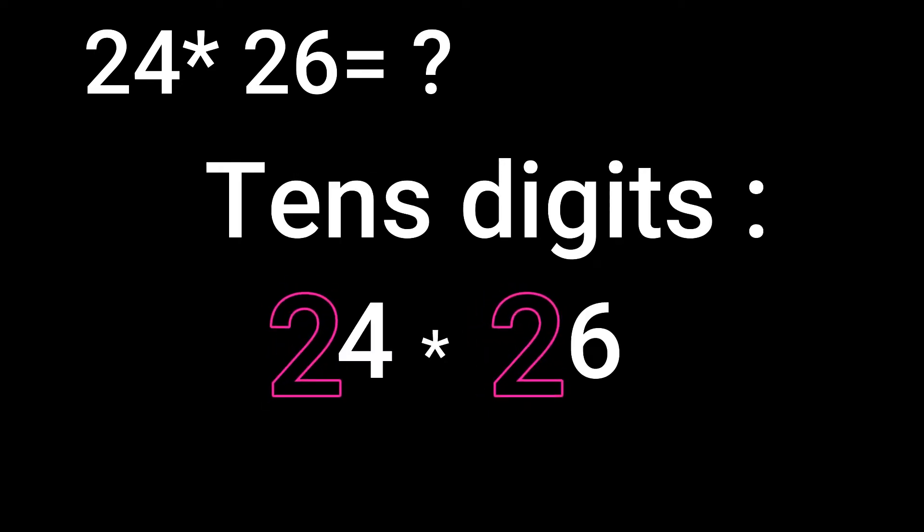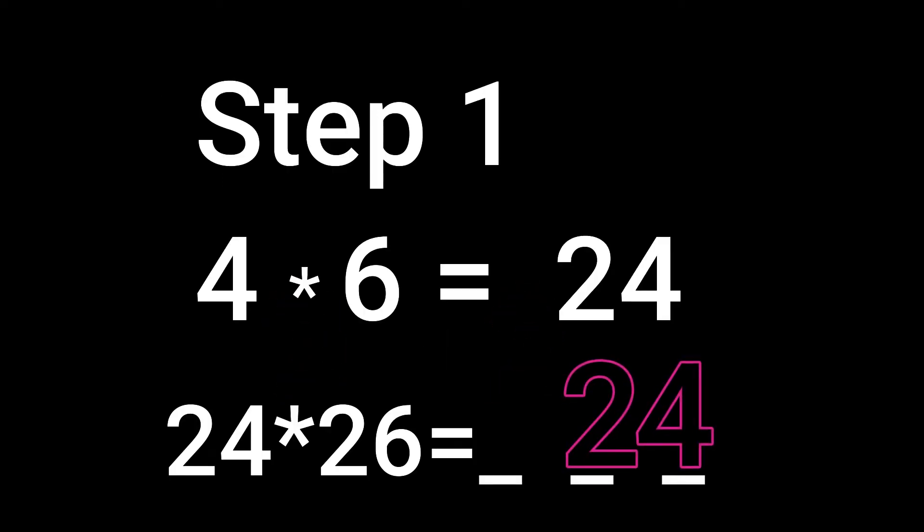Let us see the shortcut. Step 1: Multiply the units place digit, that is 4 into 6. The answer is 24. This is the last two digits of the answer.